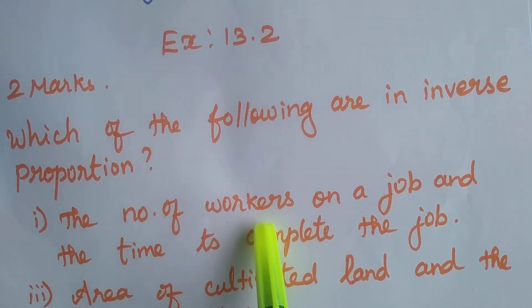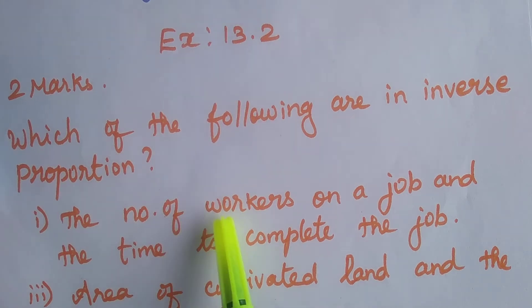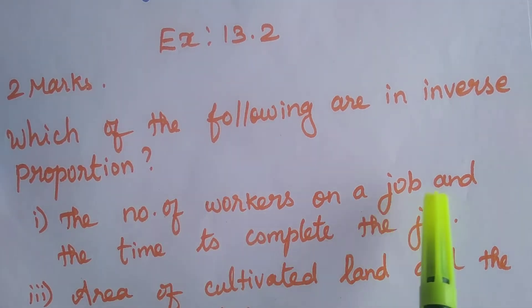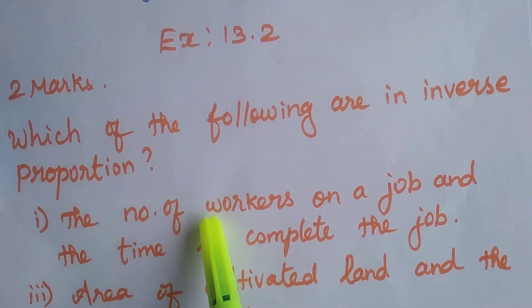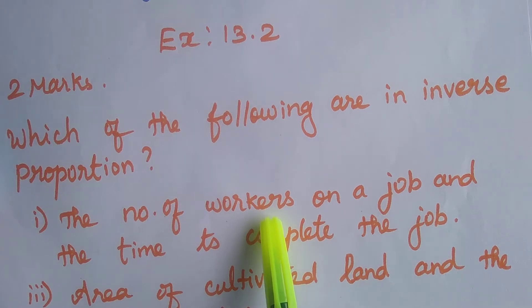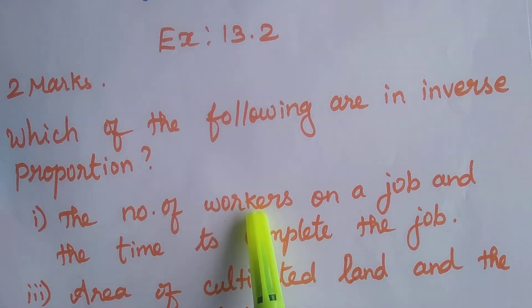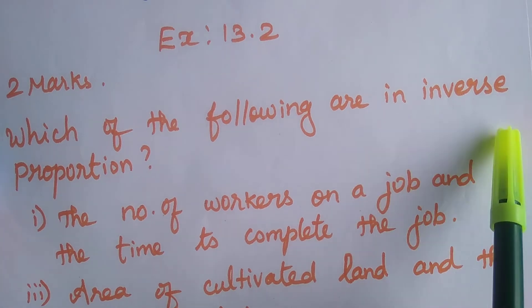First statement: the number of workers on a job and the time to complete the job. If the number of workers increases — say from 5 to 10 — the time to complete the job will decrease. If the number of workers decreases — say from 5 to 2 — the time will increase. Workers increase, time decreases. They are opposite, so it is inverse proportion.